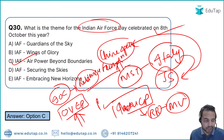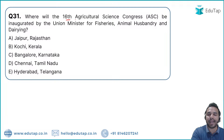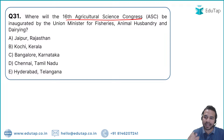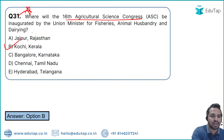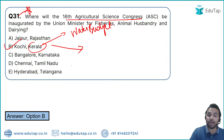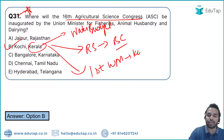Question 33: The 16th Agricultural Science Congress was inaugurated by the Union Minister for Fisheries, Animal Husbandry and Dairying. It was held in Kochi, Kerala. Kerala is also the first state to adopt a water budget, the first to use robotic scavengers (Bandicoot) to clean manholes, and has India's first water metro in Kochi.